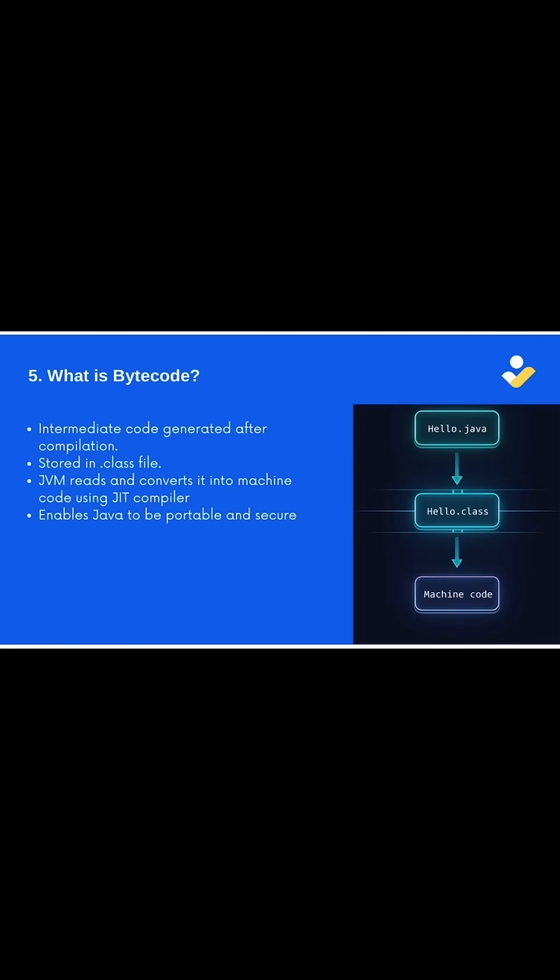Question 5: what is bytecode? Bytecode is the intermediate code generated by the Java compiler when you compile your program. It is stored inside a .class file and is not specific to any operating system or machine. At runtime, the JVM reads the bytecode with the help of the JIT compiler to convert it into machine code that your computer understands.